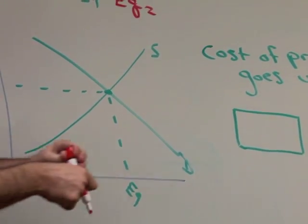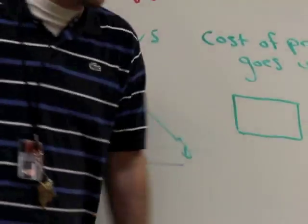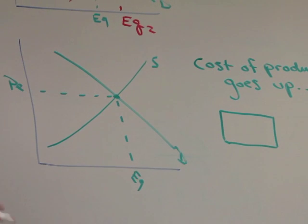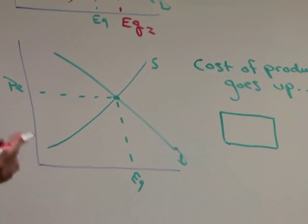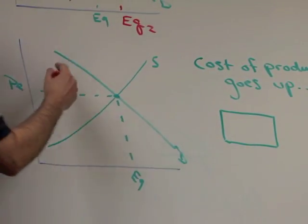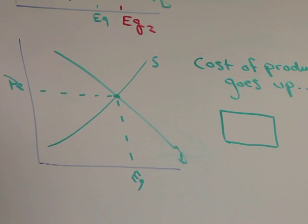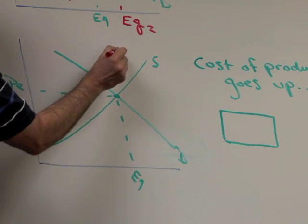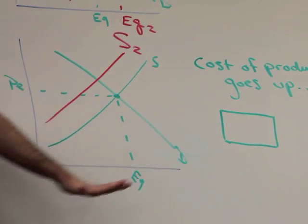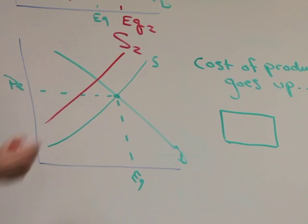Second situation, cost of production goes up. It makes it more difficult for the business, they're probably not going to be as willing and able to produce as much at each and every price. So, this situation makes it more difficult for the business to produce at each and every price. So, now they're going to produce less. So, here is the supply decrease. A decrease because it's shifting back towards the lower quantities.